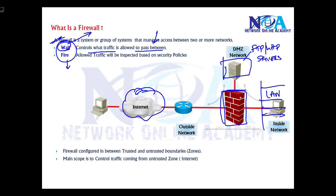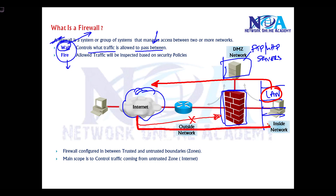The goal is to ensure that users sitting in the LAN should be able to access the internet. At the same time, users sitting on the internet should not be able to access anything on the LAN — so traffic from internet to LAN should be restricted. However, internet users should be able to access the servers in the DMZ, and LAN users should also be able to access those servers. We define specific rules, and traffic flows between these different networks based on those rules.